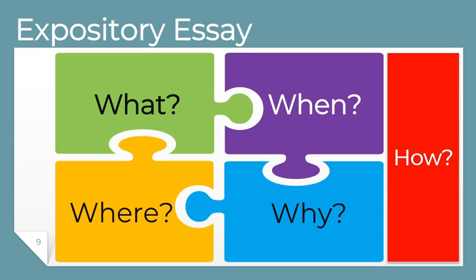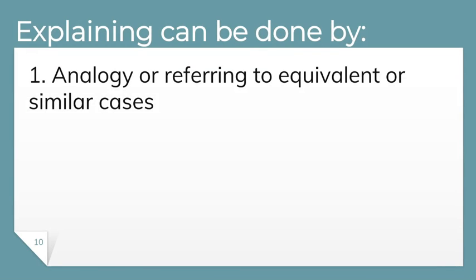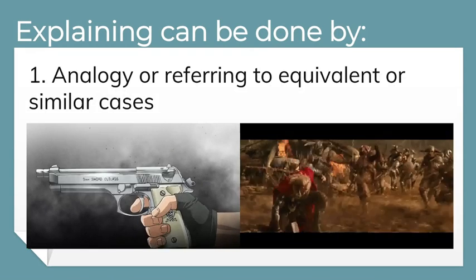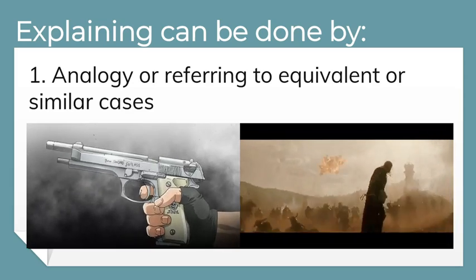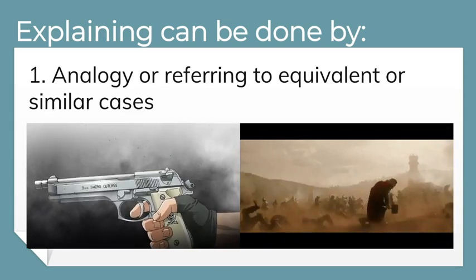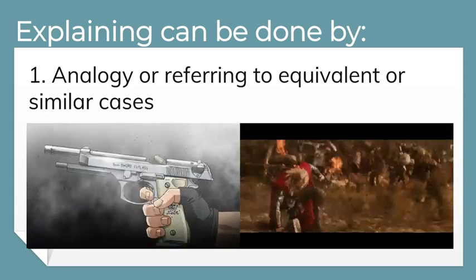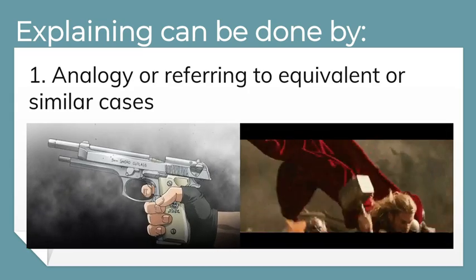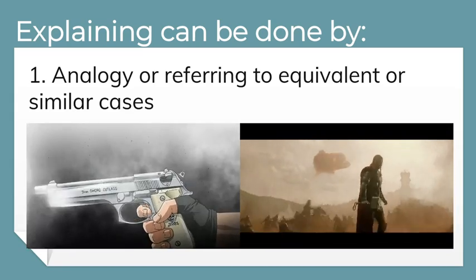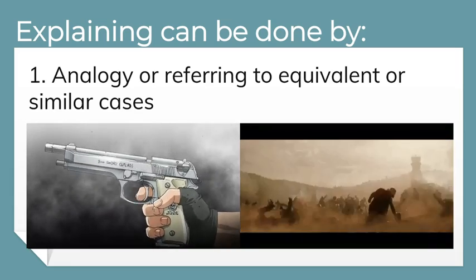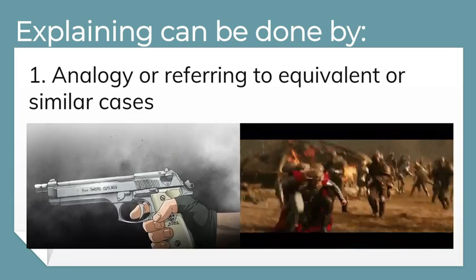How can we explain facts in our expository essay? We can use the following techniques. The first one is analogy — referring to equivalent or similar cases. For example, you can refer to violence in two images: one showing someone firing a gun, and another showing someone in a battlefield. Both images show equivalent, similar cases of violence. That is the first way you can explain something through analogy.